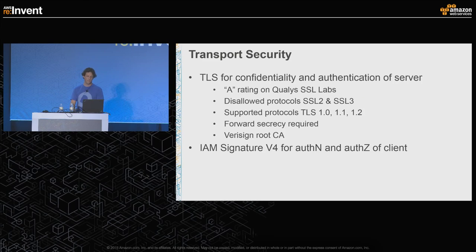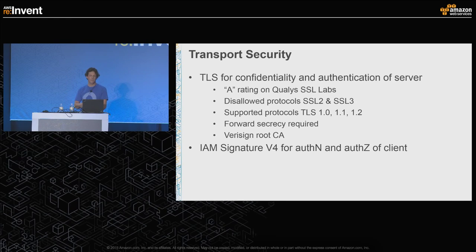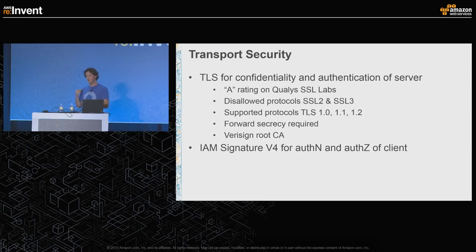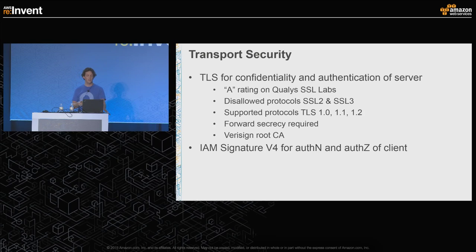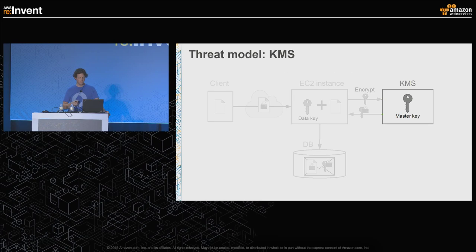The next part of the threat model is transport security. There's nothing surprising here — transport is secured by TLS for confidentiality and authentication of the server side. They get a good rating on Qualys and are generally following all best practices, including requiring forward secrecy, which may mean some older clients would not work. Authentication and authorization of the client side is done via the IAM signature from the metadata service response.